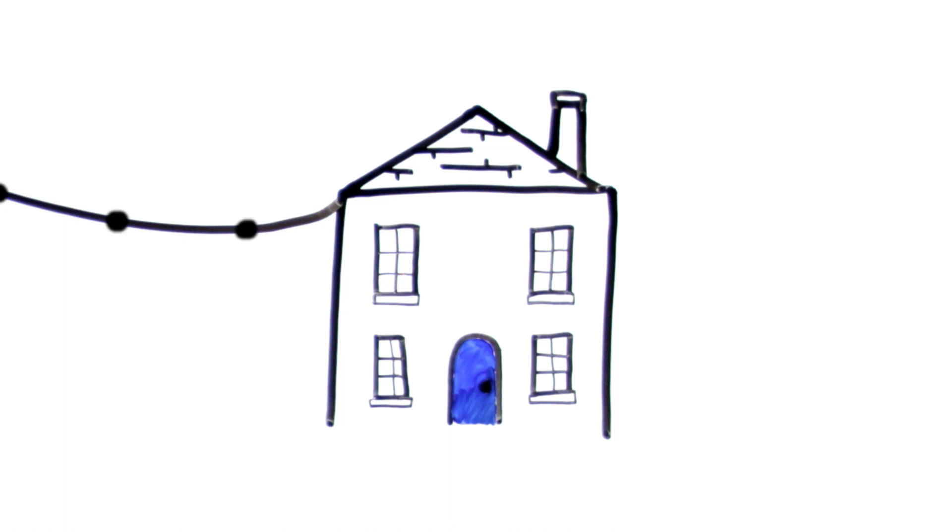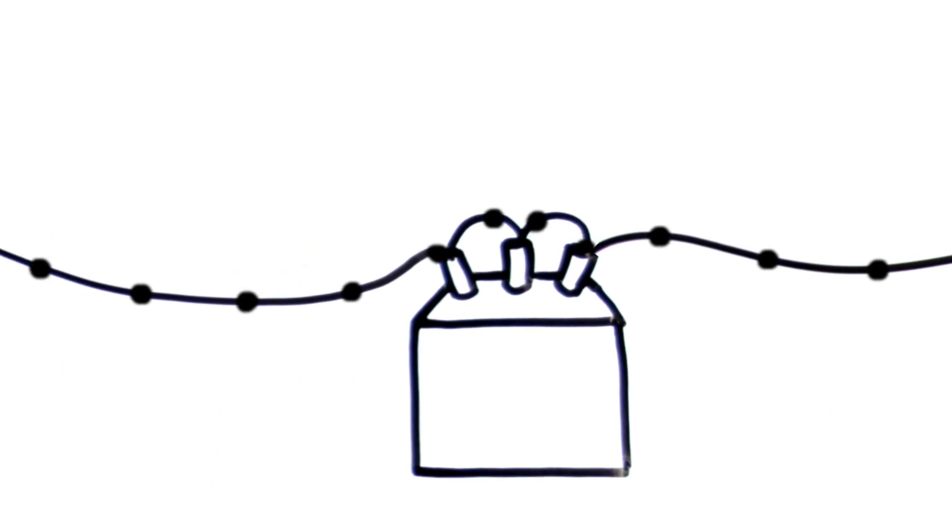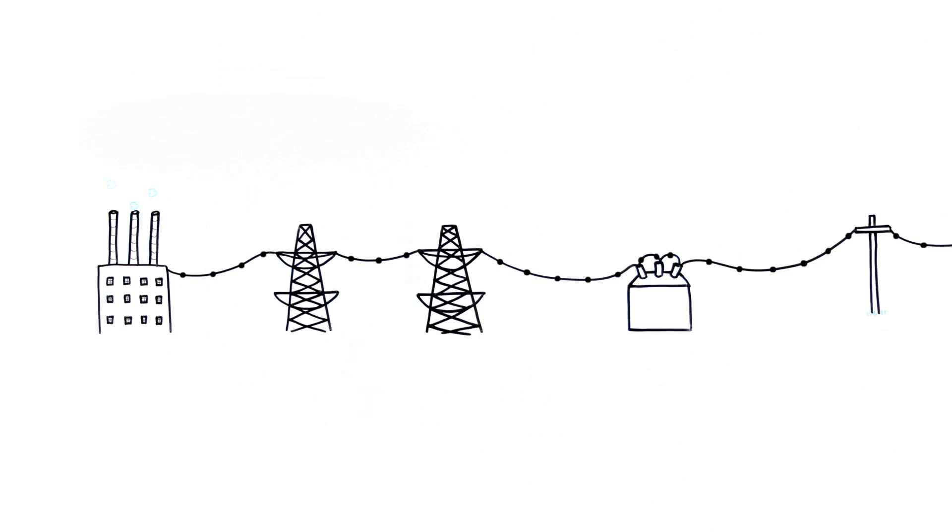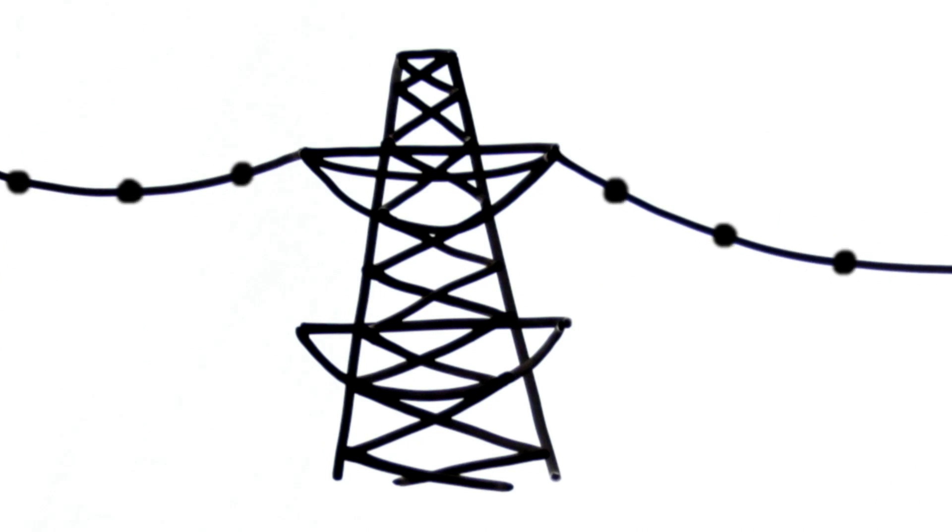Now, there are lots of homes in the UK, but not so many places that produce electricity. Which means that the electricity you use has to travel huge distances between the power station and your plug. To do this, it has to travel at high voltage on top of these big old metal pylons.